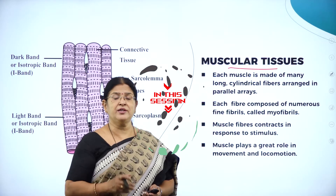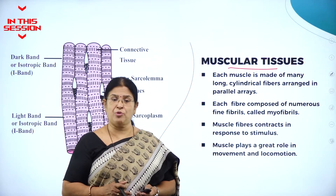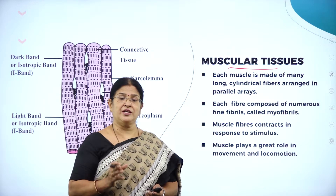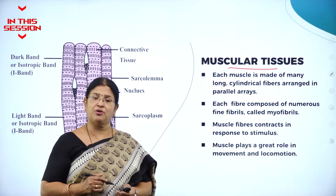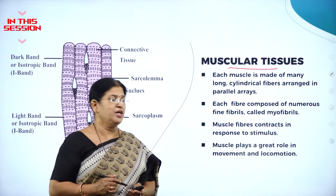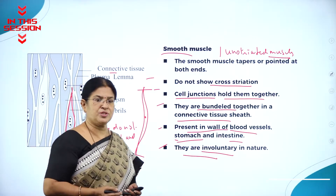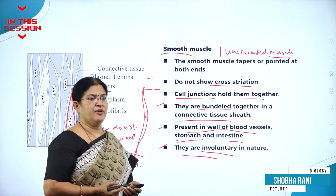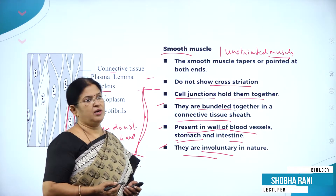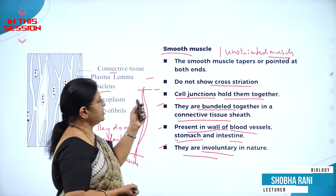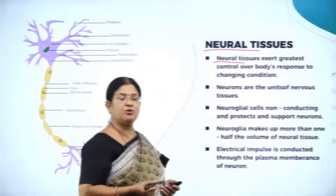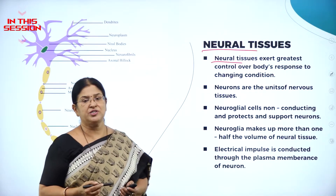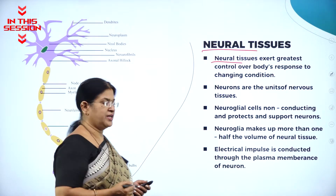Bone is a supporting tissue of the body which gives a particular shape and structure to the body. Involuntary tissues are the tissues which are not under the control of the will. Smooth muscles are also called as unstriated muscles which do not have striations or dark and light bands, and the smooth muscle tapers are pointed at both the ends. Neurons are the structural and functional units of the nervous system.